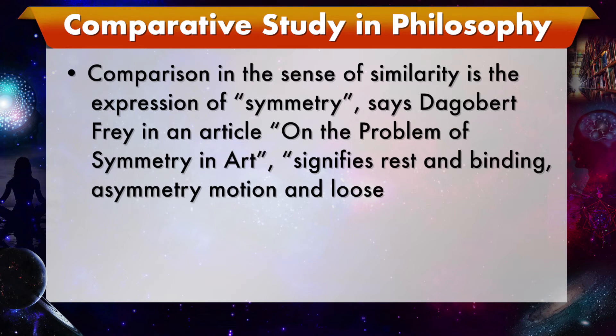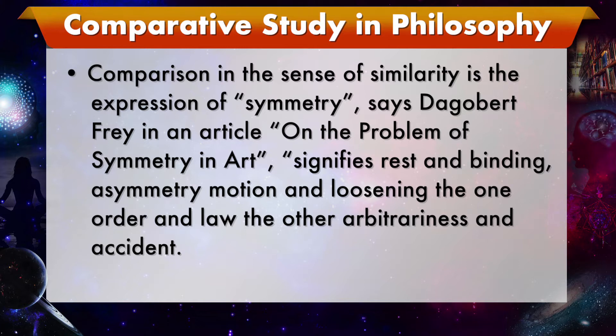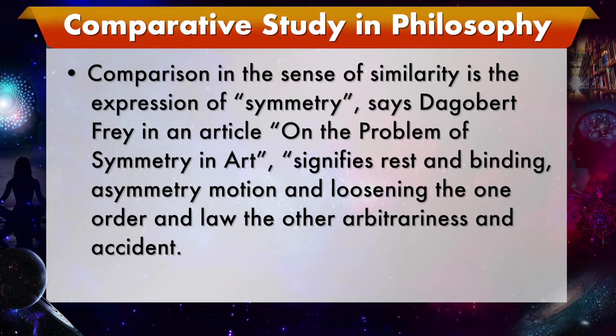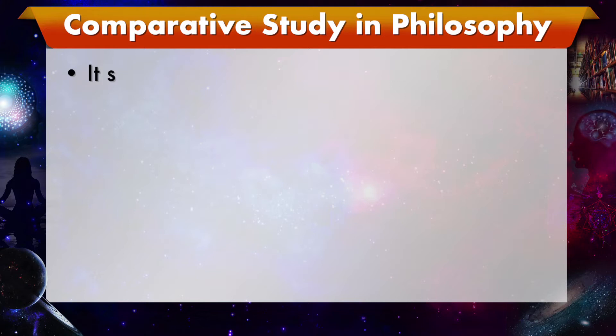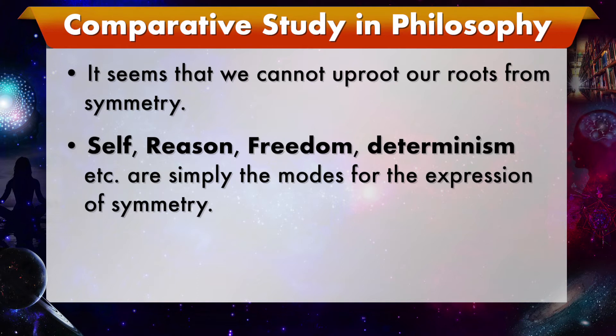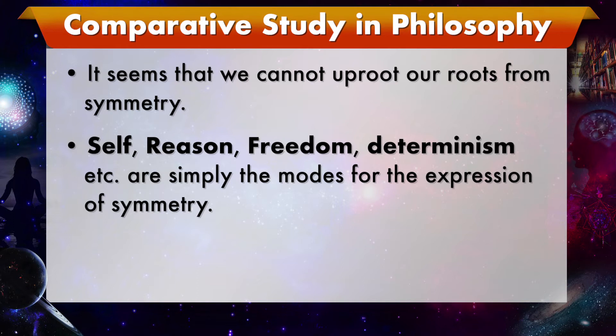But if one gives value to beauty, order, and perfection, then one is bound to give value to comparative philosophy. Comparison in the sense of similarity is the expression of symmetry. As Dagobert Frey says in an article on the problem of symmetry in art: symmetry signifies rest and binding, asymmetry motion and loosening; the one order and law, the other arbitrariness and accident. The love for symmetry is the very basis of Indian philosophical systems. Shunyata of the Buddhists and Brahman of the Advaitins are nothing but units in which the human love for symmetry has found expression.